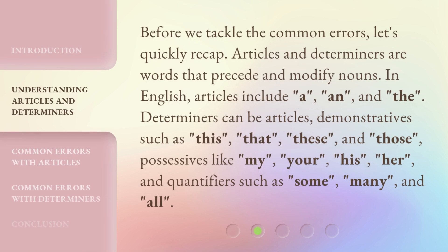Before we tackle the common errors, let's quickly recap. Articles and determiners are words that precede and modify nouns. In English, articles include a, an, and the. Determiners can be articles, demonstratives such as this, that, these, and those, possessives like my, your, his, her, and quantifiers such as some, many, and all.